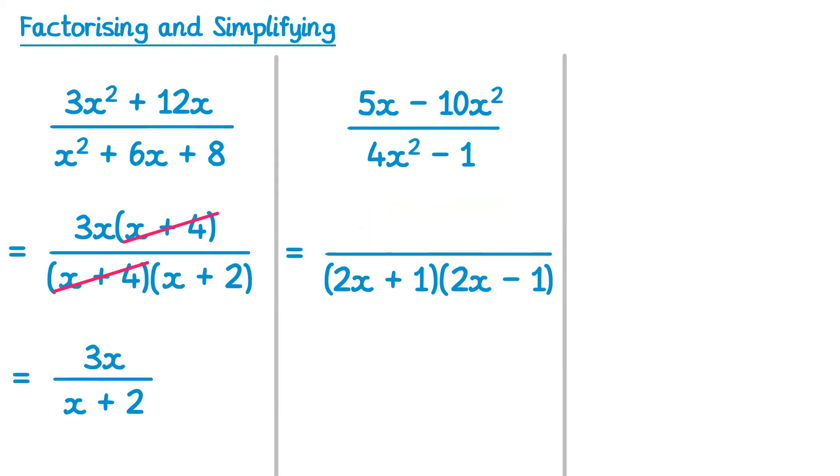Now we can cancel out these terms, and it simplifies to give -5x/(2x + 1), which you may write with the negative in front.